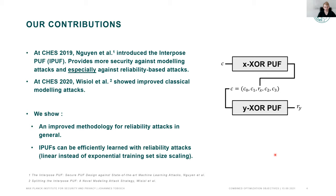So where does our contribution come in? At CHES 2019, Nguyen et al. introduced a new design: the Interpose PUF. This design had new ideas to provide security against state-of-the-art attacks, especially reliability attacks, which are the most devastating because they require the smallest training set. Already a year later at CHES 2020, Wisiol et al. showed that the security of the IPUF was not quite as good as claimed. And this year, we show that reliability attacks are also possible, breaking the original security claims.